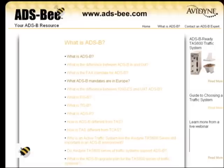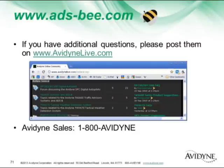Avidyne has a website called adsb.com — you've seen our little bumblebees all over these slides. ADS-B.com was already taken, so we adopted the little bumblebee as our mascot and the name ADS-BEE. You can go on there — it's a portal. Anytime we see a good article about ADS-B, we post it there so you'll find it as a good portal to download information. We also have a thing called Avidyne Live, which is a forum with frequently asked questions posted — anytime those are updated, you'll be alerted and we'll try to keep you up to date on what's going on with Avidyne.